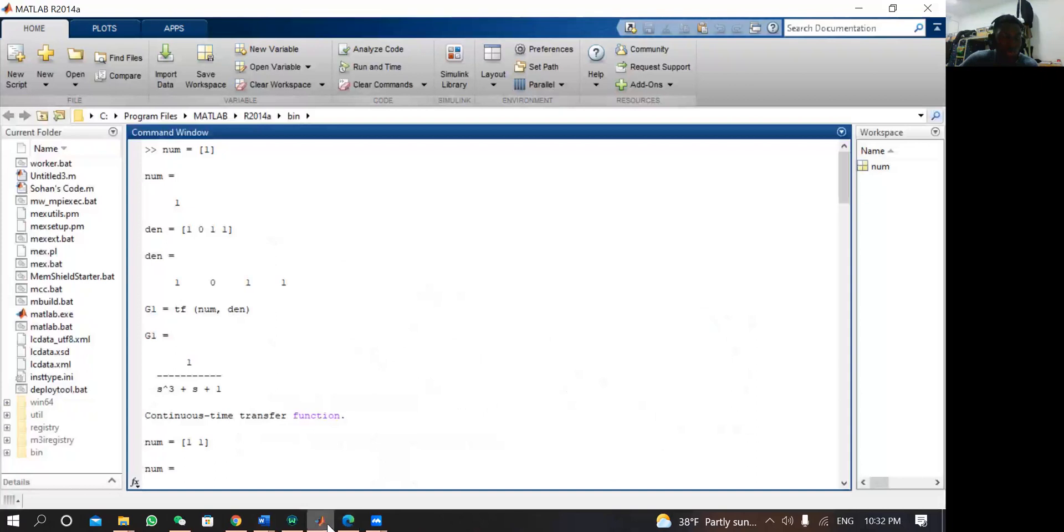So we have 1, 0, 1, 1. After typing numerator which equals 1, MATLAB will automatically give you this, telling the value of the numerator and the matrix of the denominator. Then you write this function: G1 equals Tf means transfer function, Tf(numerator, denominator). After typing this and pressing enter, MATLAB will print this for you. This is the equation for G1.